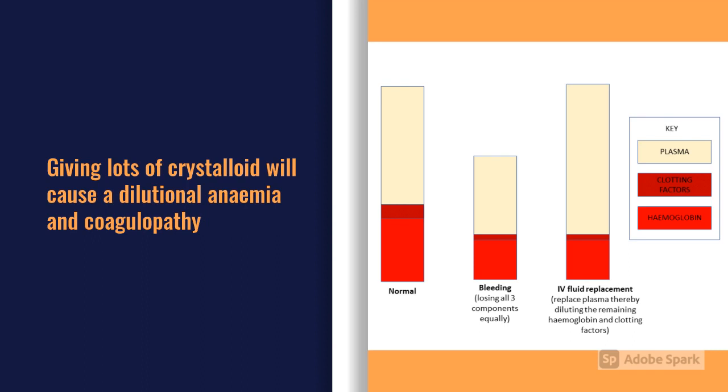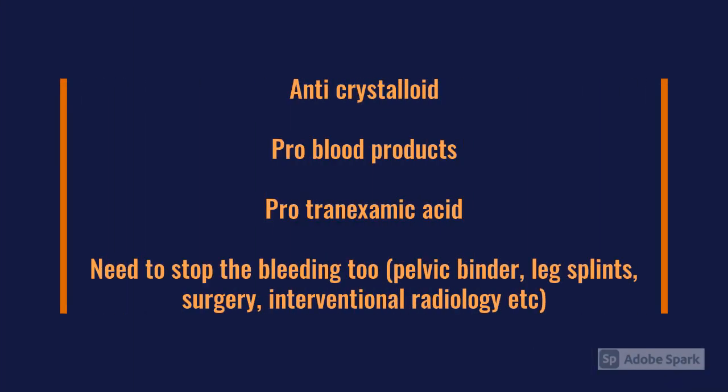In major trauma, it's anti-crystalloids and pro-blood products — get blood products in early if necessary. Think about giving tranexamic acid to reduce transfusional needs, and replace like with like to avoid dilutional coagulopathy. You also need to arrest the source of hemorrhage, otherwise you're just filling the bath with the plug out.